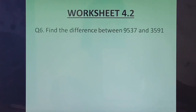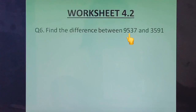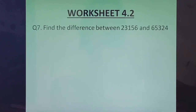Question 6: Find the difference between 9537 and 3591. They have asked us to find the difference, so we will first see which is the bigger number. 9537 is bigger, so we will write this number first, then the next number below it, and subtract. Question 7: Find the difference between 23156 and 65324. Here again, you will have to look at both numbers, see which is bigger, and write the bigger number on top.